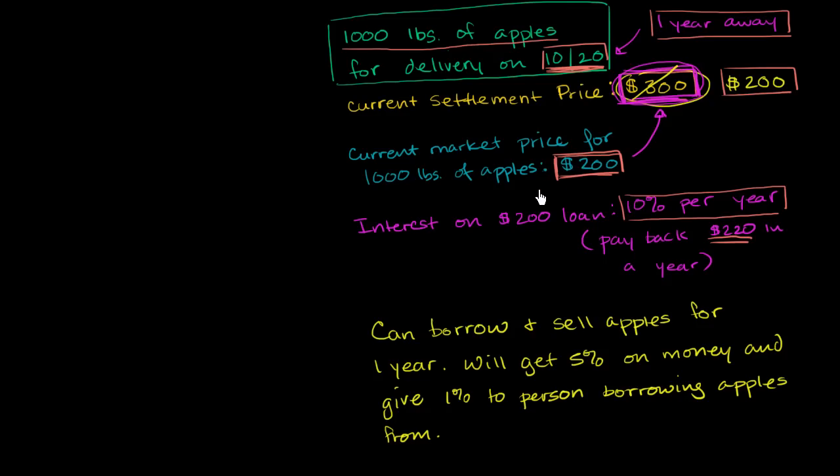Let's also assume, above and beyond the assumptions of the last video, that we can borrow and sell apples in the current market, that we can actually short apples. And when I borrow, so I go to someone who's got 1,000 pounds of apples, who doesn't really see any need for them over the next year, and say, can I borrow those apples? And what I do is I say, I'll borrow those apples, I'll sell those apples in the market today, and of the interest that I get on those apples, I'm going to give you 1%, the person who actually owns the apples.